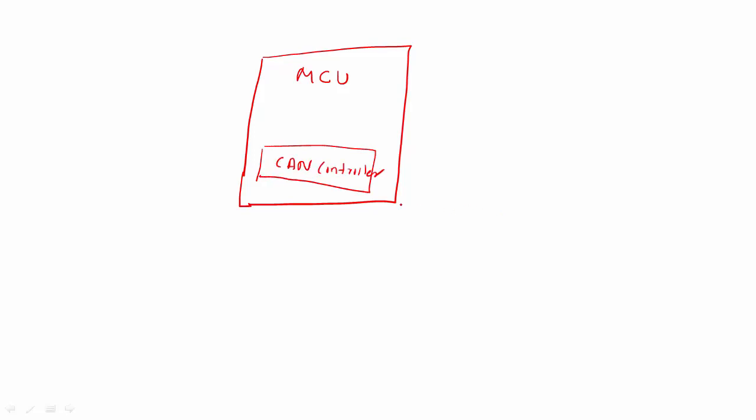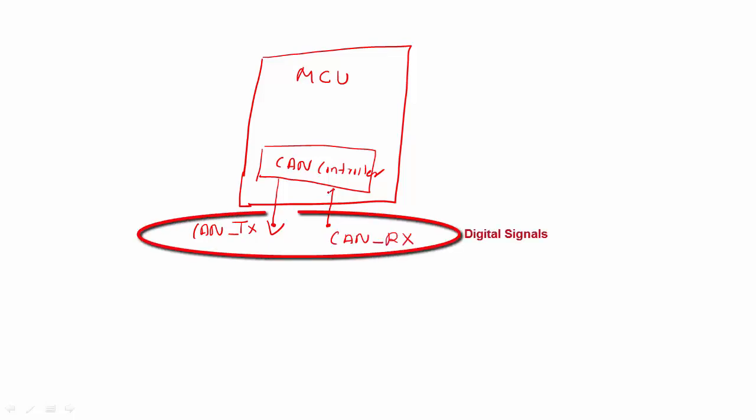And this CAN controller gives you two single-ended pins. These are actually digital pins in order to communicate. One is called CAN-TX, and another one is called CAN-RX. This is for the reception of the data, and this is to transmit the data.